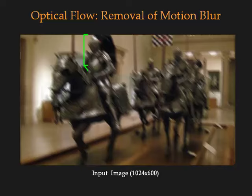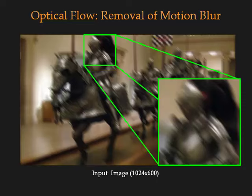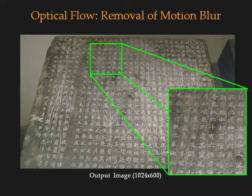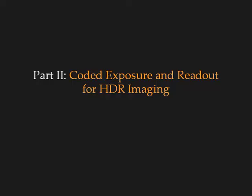The optical flow can also be used to remove motion blur caused by camera shake. Here is the input blur image with interlaced readout. Here is the output de-blurred image. Here is another example. This is the input blur image. Here is the output de-blurred image.